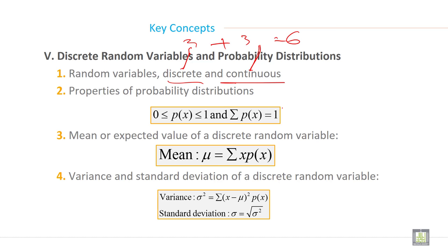Mean or expected value of a discrete random variable: mean mu is equal to summation of x times probability of x. Variance and standard deviation of discrete random variable: variance sigma squared is equal to summation of x minus mu squared into probability of x, and standard deviation is equal to square root of variance.